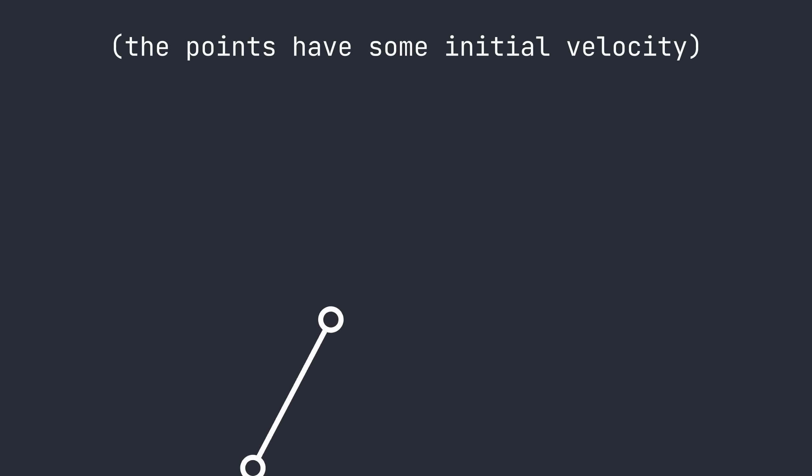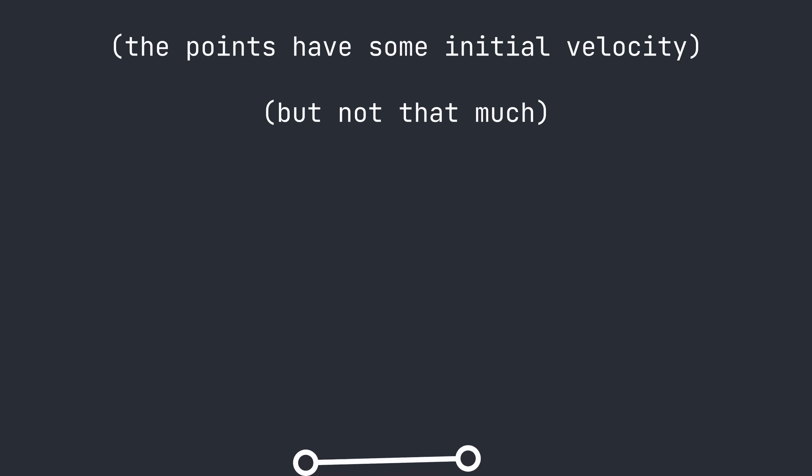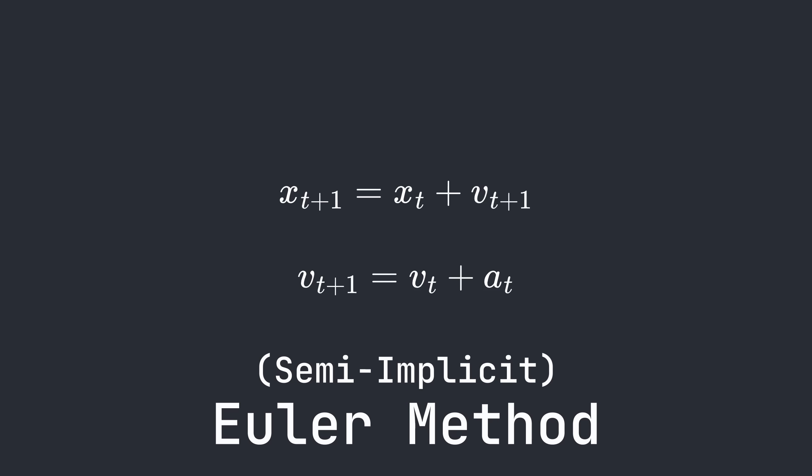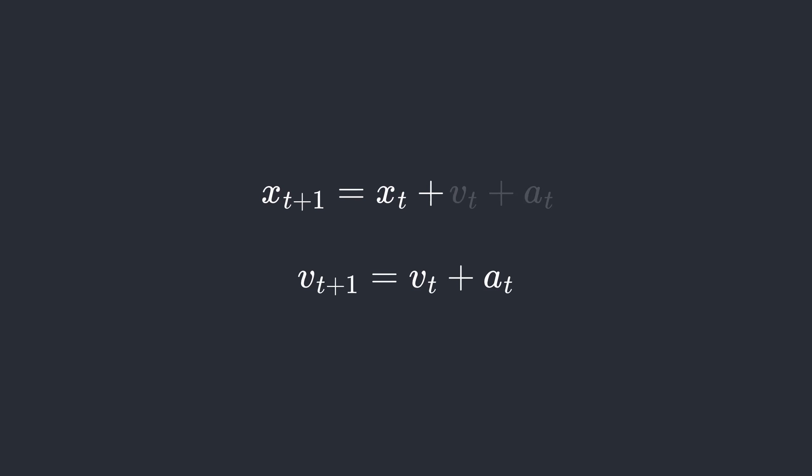Now that we have our distance constraint formula, let's see what happens when we run our physics simulation. Well, it seems we've broken physics. The problem is that we're not considering the motion of the constraints in our physics rules. Specifically, whenever the points are pulled by their constraints, it should also affect their velocity.